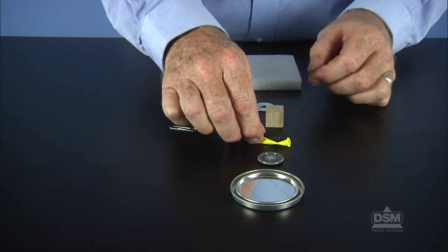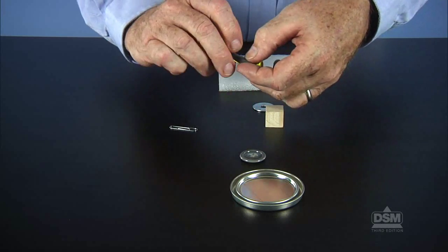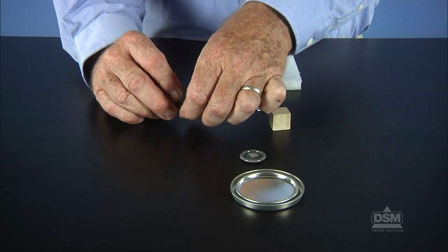However, the force was able to pass through thin, non-magnetic objects, such as air, paper, and aluminum foil.